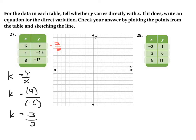For the second set of values, k equals negative 1.5 divided by 1, which gives us negative 1.5. Fun fact: that's the same as negative 3 over 2 — these are the same value, just written differently.